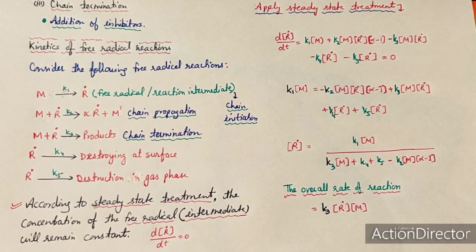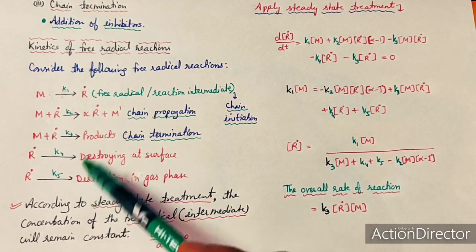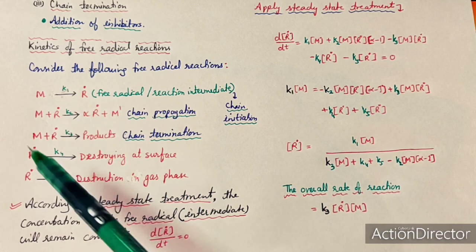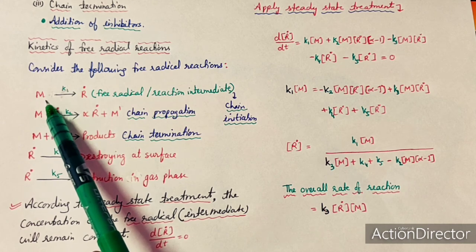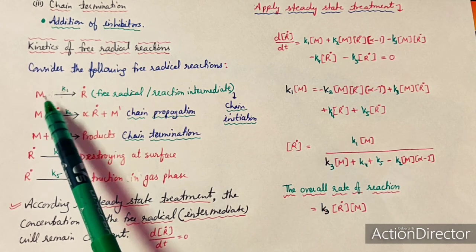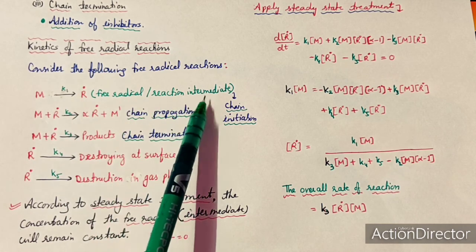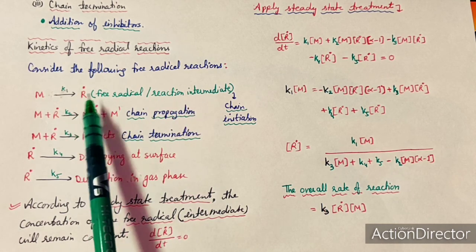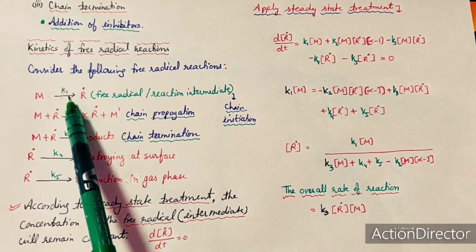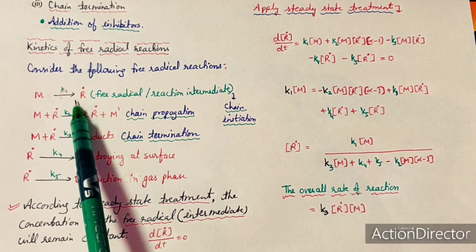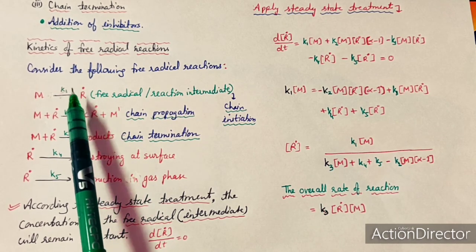For the kinetics of free radical reactions, we have written some reactions of free radicals. In the first reaction, the monomeric molecule is converting into a radical — this is the radical generation step. This is the chain initiation step, which can be done through thermal process, photochemical process, electric discharge, or oxidation-reduction reaction.